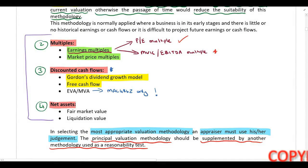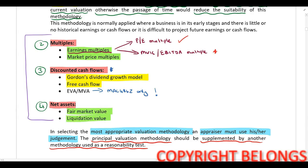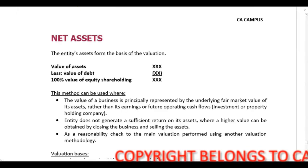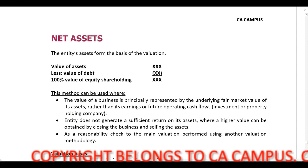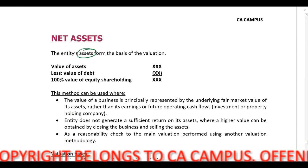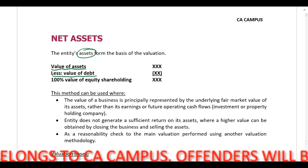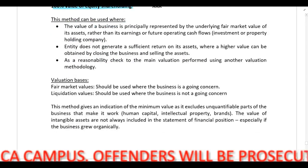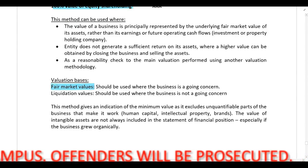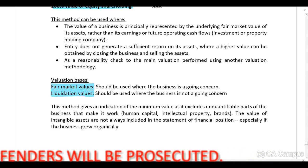Lastly, we are going to look at performing a valuation using the net asset method. This calculation can either be done using fair market values or liquidation values. With this valuation methodology, the company's assets form the basis of the valuation — we take the value of assets, deduct the value of debt, and that leaves us with the value of equity. Whether we use fair market or liquidation values depends on whether the company is a going concern or not.